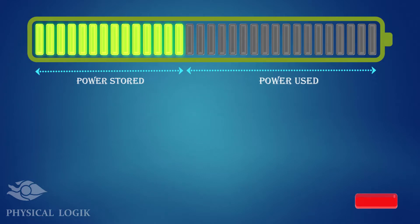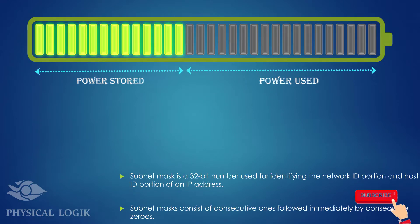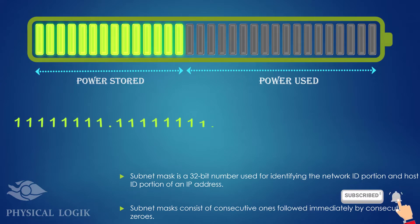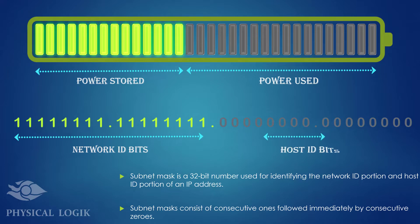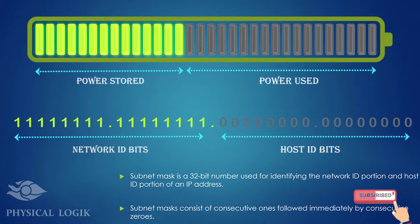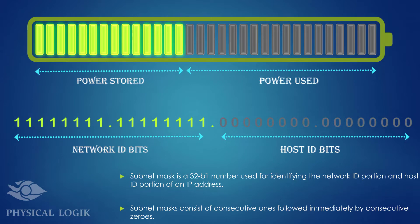In a similar way, a subnet mask is a 32-bit value which consists of consecutive 1s followed by consecutive 0s. The number of 1s reveals the network ID portion of the IP address to which it is applied, and the 0s indicate the host ID portion. The 1s are always on the left, followed by 0s on the right. It is necessary to note that you cannot have 1s between 0s or 0s between 1s.